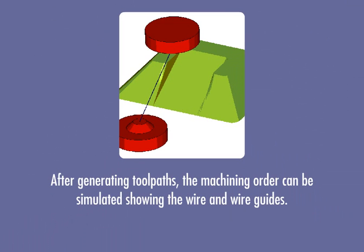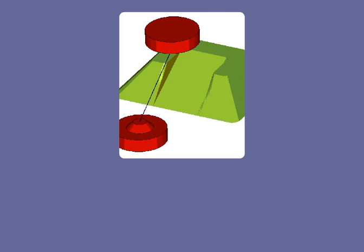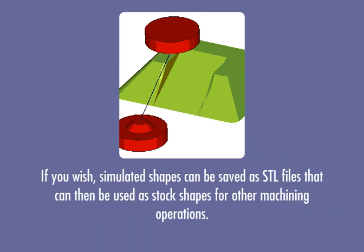the machining order can be simulated showing the wire and wire guides. If you wish, simulated shapes can be saved as STL files that can then be used as stock shapes for other machining operations.